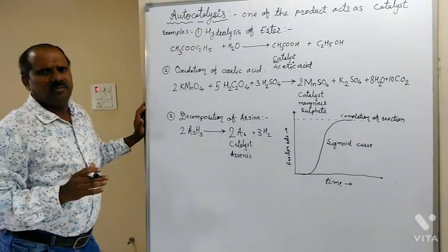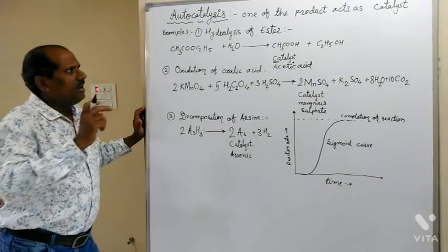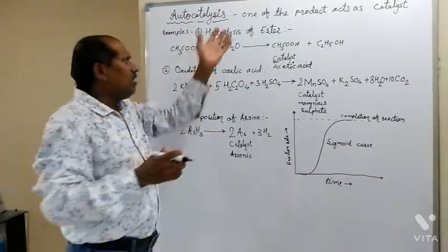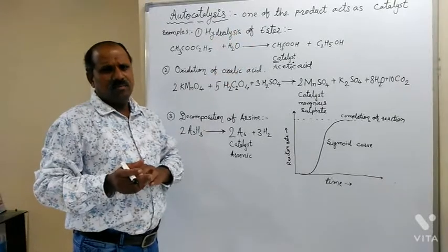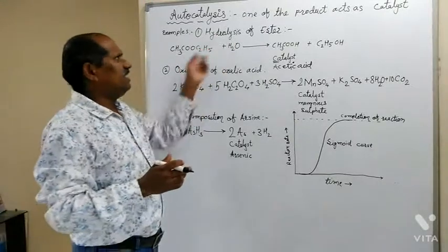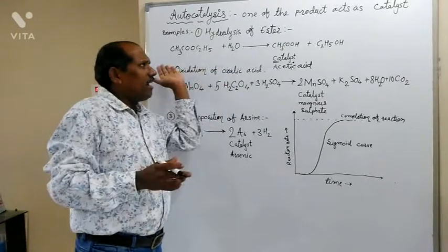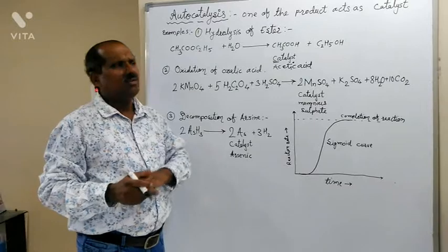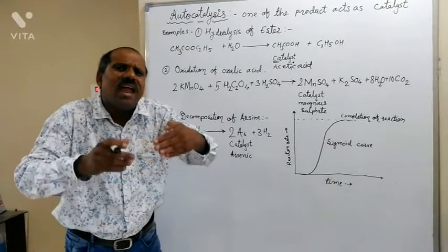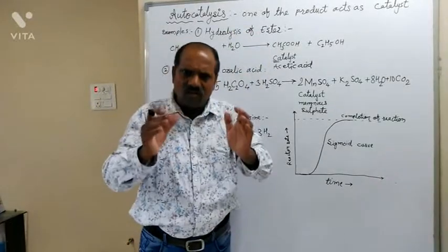Today I am explaining autocatalysis. It is a special type of catalysis in which one of the products of the reaction itself acts as a catalyst for the same reaction. We are not using any foreign substance or adding any external catalyst. Whatever products are forming, one of those products itself acts as a catalyst for the same reaction — that type of catalysis is called autocatalysis.